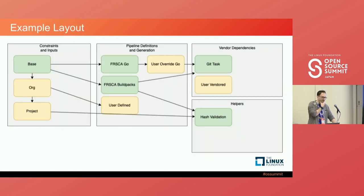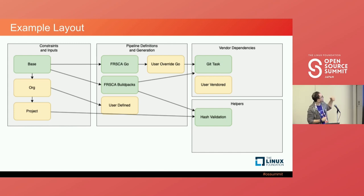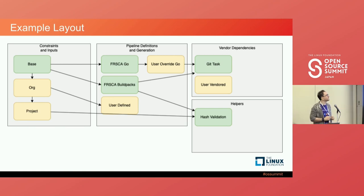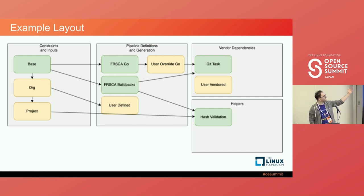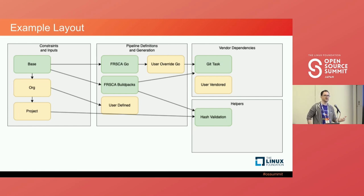This is what an example layout might look like. You might have a baseline with some constraints that includes Go and build packs. The org pulls in some user-defined things, and you might have overrides — pulling in Fresca's Go build but adding additional things to override it. You can also have helper libraries like a hash validation function to verify whether something is a valid hash.